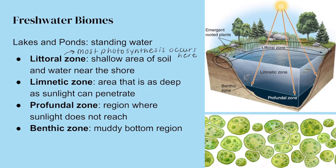The limnetic zone is where rooted plants cannot survive. It's the open water area — the center of the lake or pond — with no sediments. But it is as deep as sunlight can penetrate, so what we do get in this region is phytoplankton, which is floating algae. These are the only photosynthetic organisms in this area since we can't support any rooted plants.